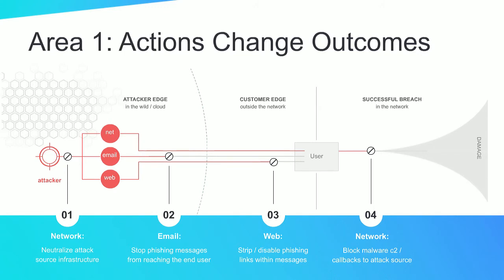The way to think about this is very similar to how vaccinations work in the medical world. In the late 18th century, Edward Jenner successfully inoculated a young boy against the smallpox virus, and all the derivative work from that completely changed the game for humankind — allowing us to successfully deal with devastating diseases like polio and measles. Vaccination was very effective because very early on you identify the bad disease and inoculate the target. That's effectively what Area One does — identify phishing campaigns and infrastructure very early on, then beef up your defenses to stop any phishing activity from communicating with that infrastructure.